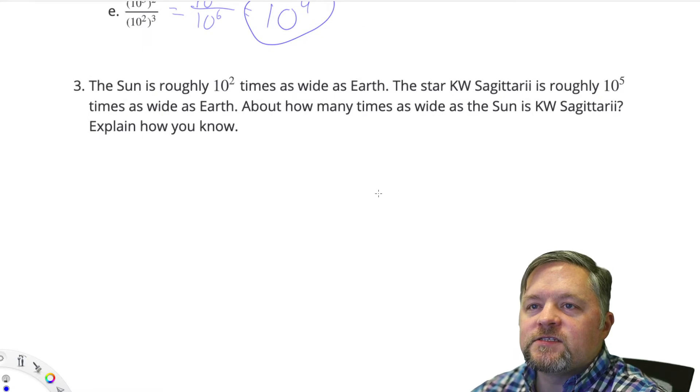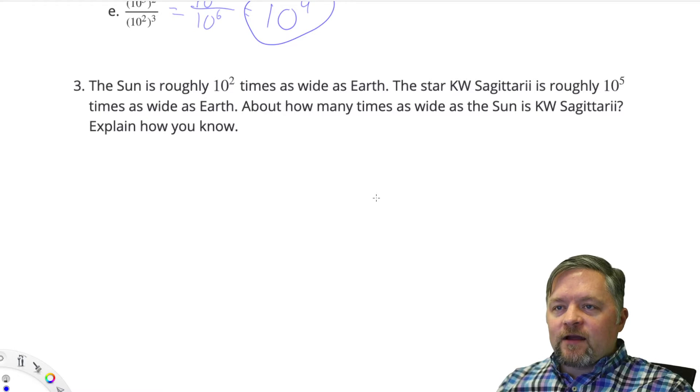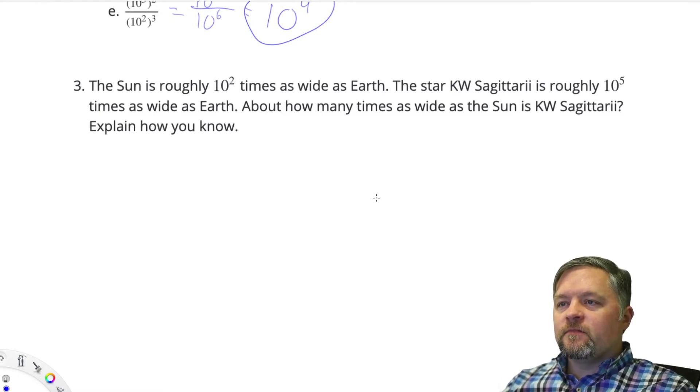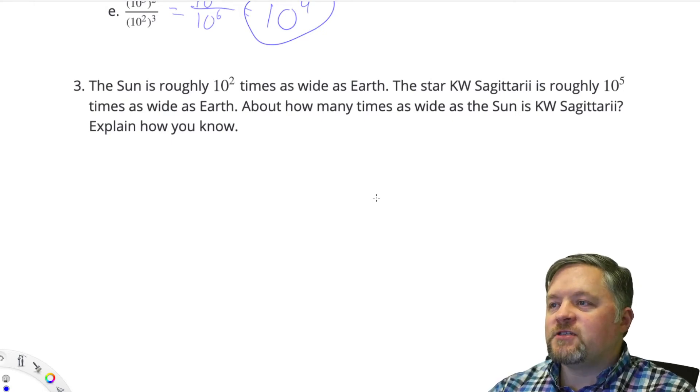The sun is roughly 10 squared times as wide as Earth. The star KW Sagittarii is roughly 10 to the 5 times as wide as Earth. How many times as wide as the sun is KW Sagittarii?